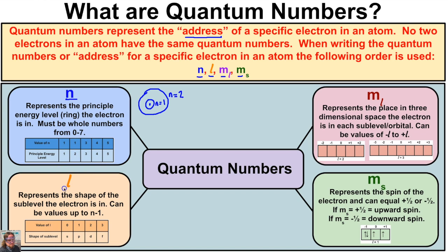The quantum number l represents the shape of the sublevel the electron is in — essentially the s, p, d, or f sublevel. If l equals zero, that refers to the s sublevel. If l equals one, that refers to the p sublevel. If l equals two, that refers to the d sublevel. And if l equals three, that refers to the f sublevel.